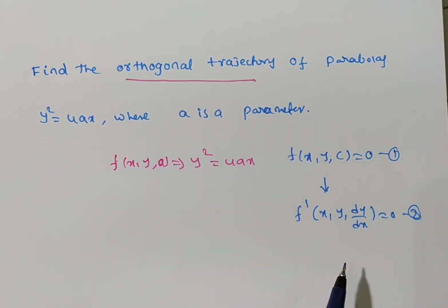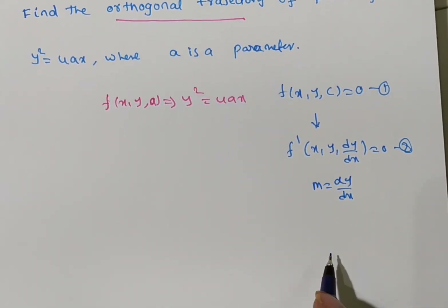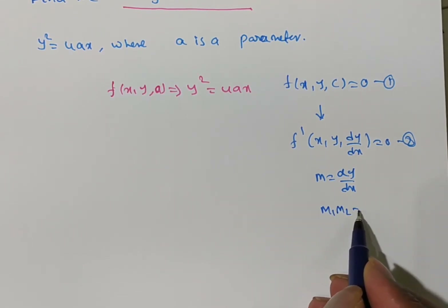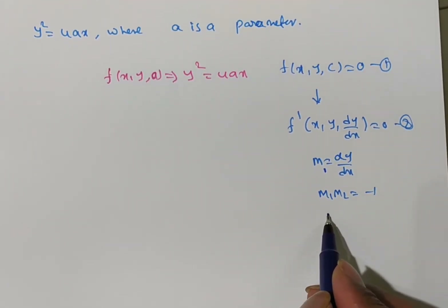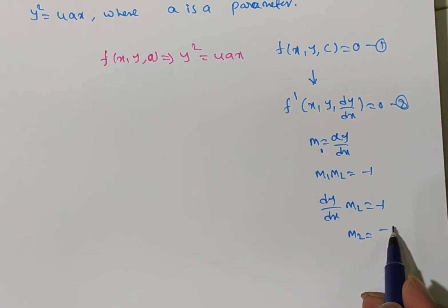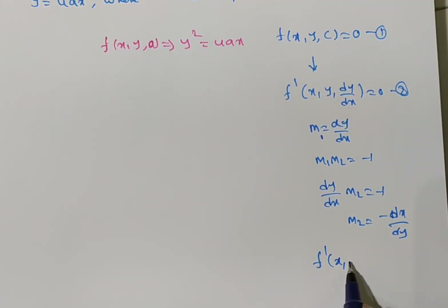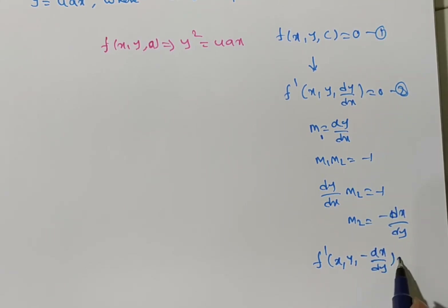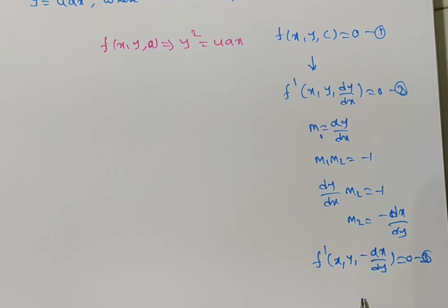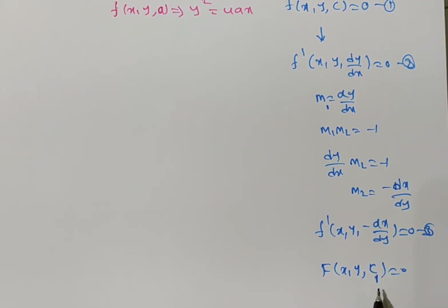To find the orthogonal trajectory, in the differential equation the slope m = dy/dx. We know that for orthogonal curves, m₁ × m₂ = -1. So if m₁ = dy/dx, then m₂ = -1/(dy/dx) = -dx/dy. We replace dy/dx with -dx/dy to get the orthogonal differential equation f(x, y, -dx/dy) = 0. Then we simplify to get F(x, y, c₁) = 0, where c₁ is a parameter.